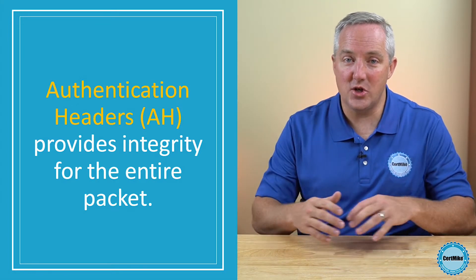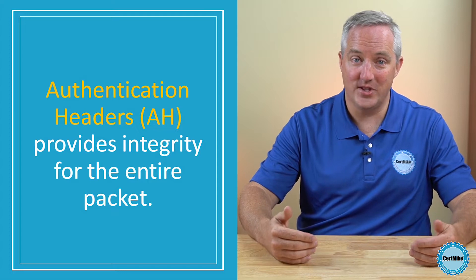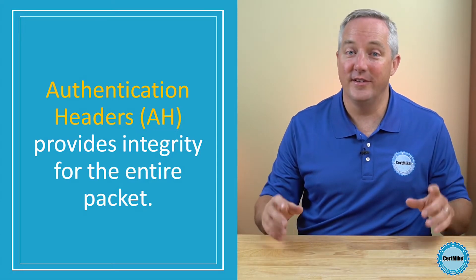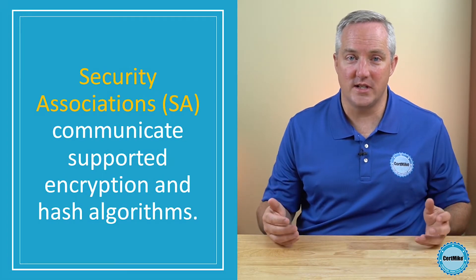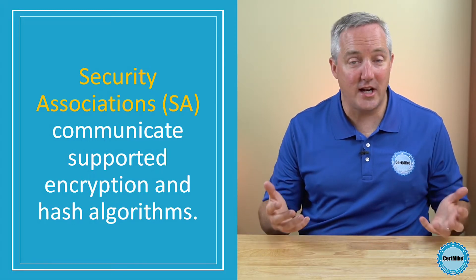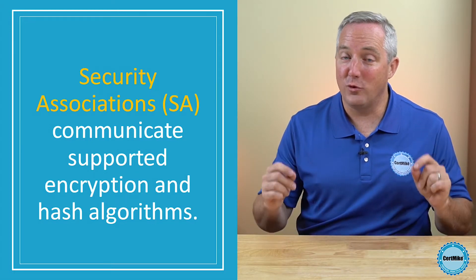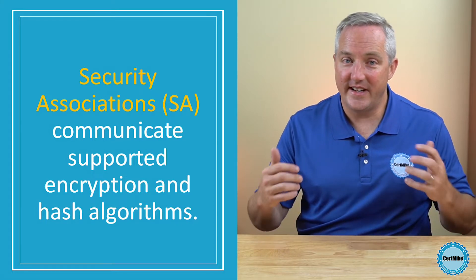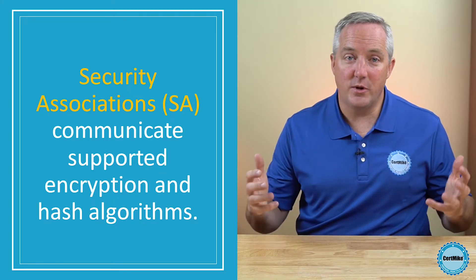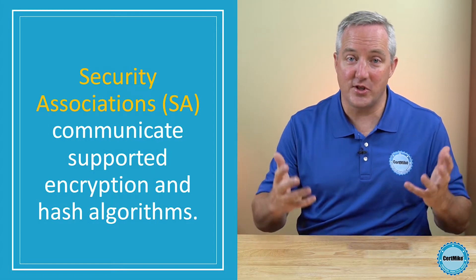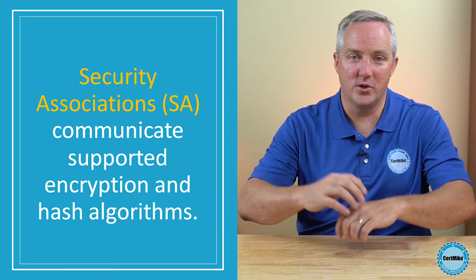A single communication can combine both ESP and AH to achieve confidentiality for packet payloads in conjunction with integrity verification for the entire packet, including the header. IPsec uses a concept known as security associations to allow systems to communicate the cipher suites they support to each other. Each system makes available a list of cryptographic protocols and hash functions it is configured to support — each of these configurations is known as a security association. Systems that wish to communicate compare their lists to find the strongest common security association and then communicate using those algorithms.